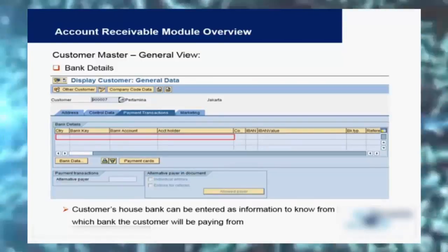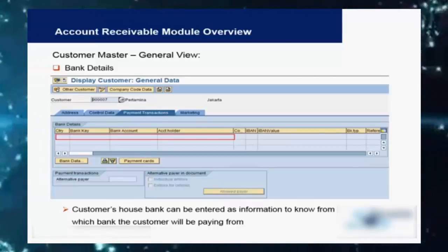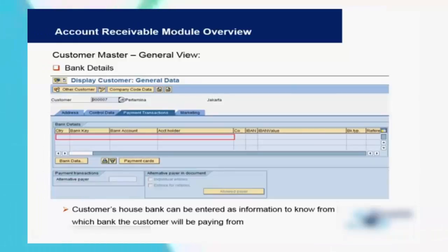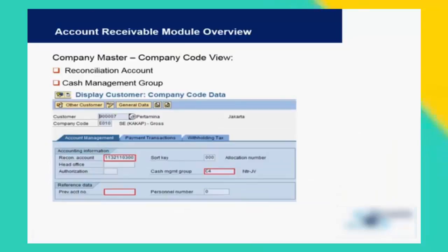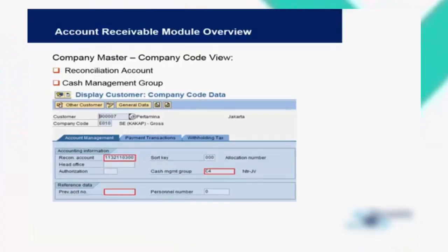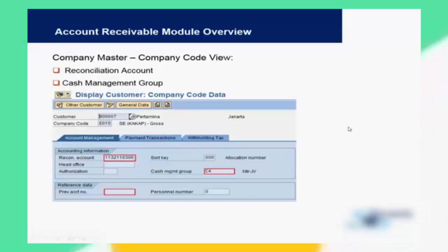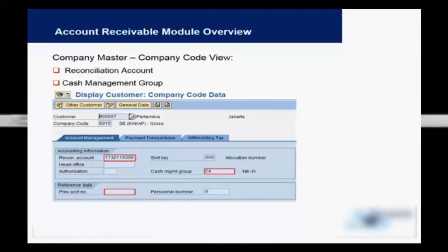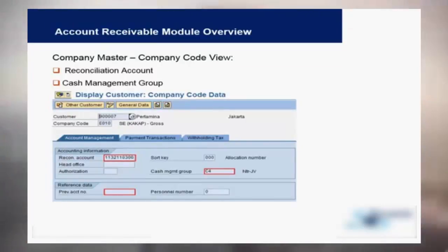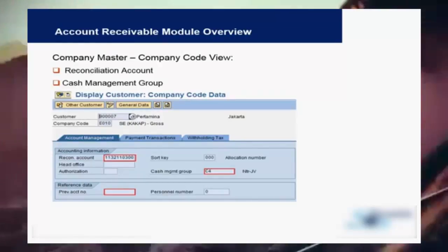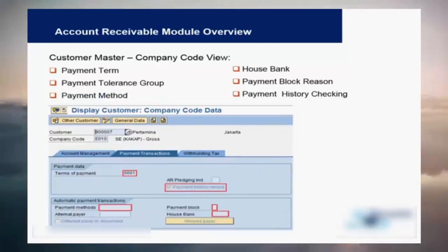Knowing the bank details is important so we know from which account the customer is making a payment, especially for online transfers. The next tab is the company code view — here the company code appears, and this is specific to that company code where you have the reconciliation account, cash management group, and similar fields. You can also store any previous account number from a legacy system here.